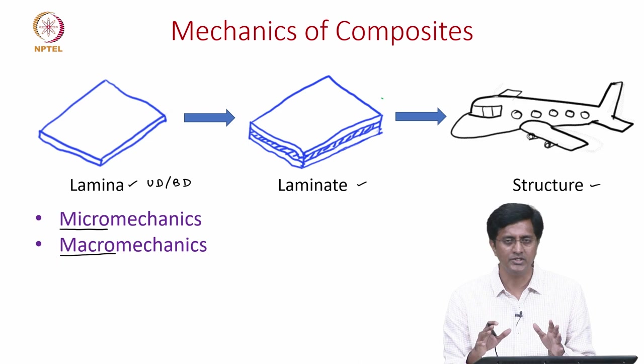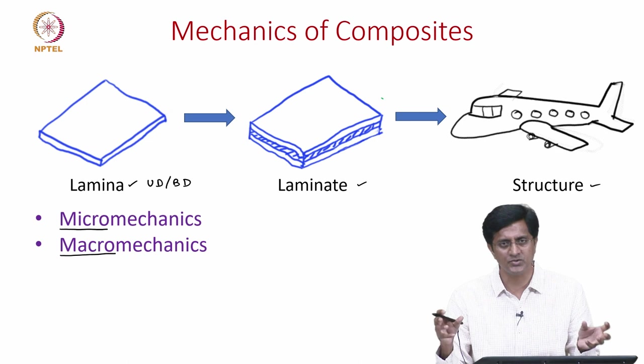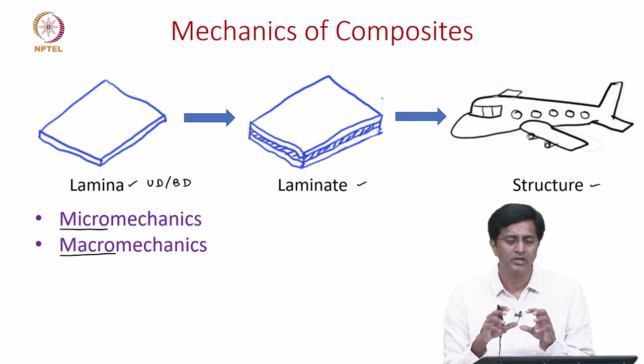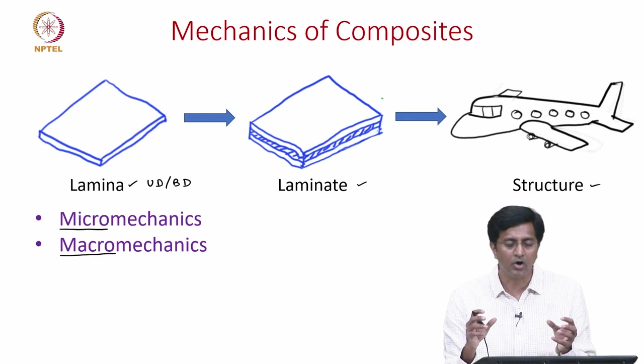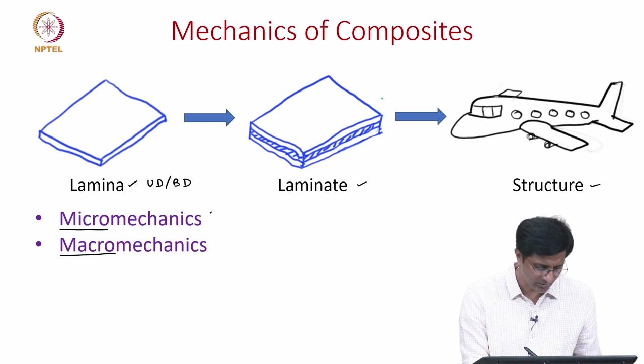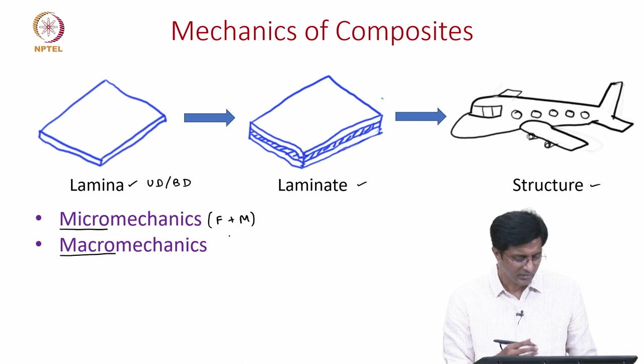This is micro mechanics because we are assuming that the lamina is heterogeneous — the individual fiber is homogeneous and the matrix is homogeneous, but since we are mixing both of these materials we are now looking at a non-homogeneous material. That is why we need to look at how to predict or estimate the properties of this lamina starting from fibers and the matrix. This will be covered during the micro mechanics of lamina where we discuss the fiber plus the matrix.